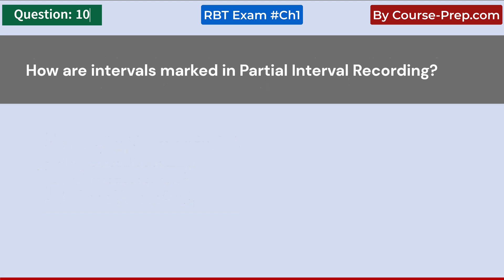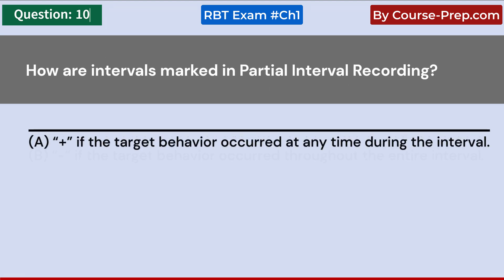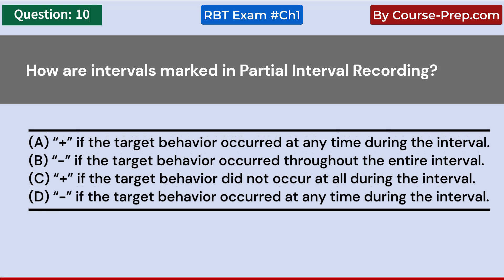How are intervals marked in partial interval recording? A. Plus if the target behavior occurred at any time during the interval. B. Dash if the target behavior occurred throughout the entire interval. C. Plus if the target behavior did not occur at all during the interval. D. Dash if the target behavior occurred at any time during the interval. Answer A: Plus if the target behavior occurred at any time during the interval.